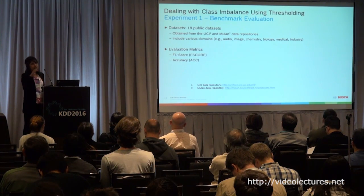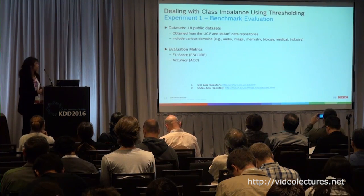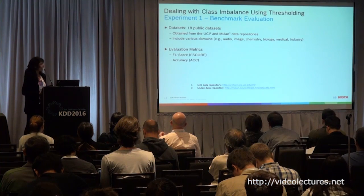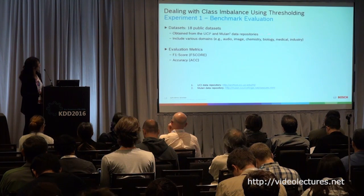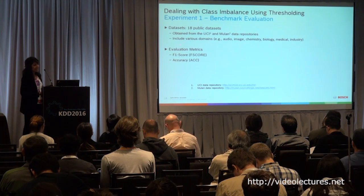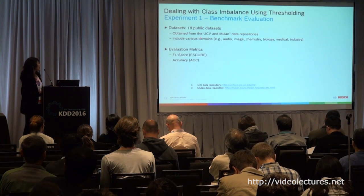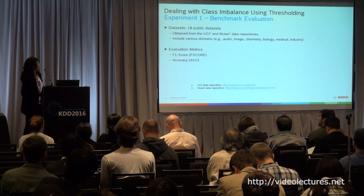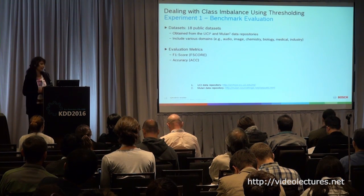After that, the splitting criterion is very similar to any decision tree algorithm. For the benchmark evaluation, we had 18 public datasets — standard datasets from UCI and Milan data repositories — including data from various domains: audio, image, chemistry, biology, medical, and so on. The evaluation metrics used were F1 score and accuracy.